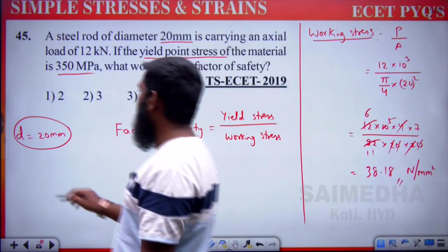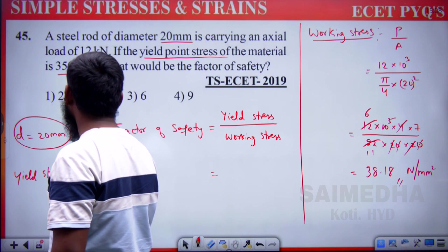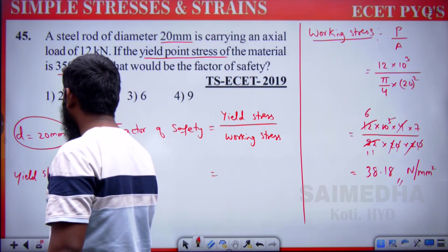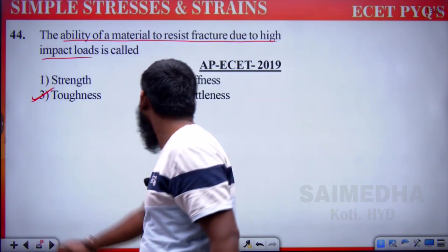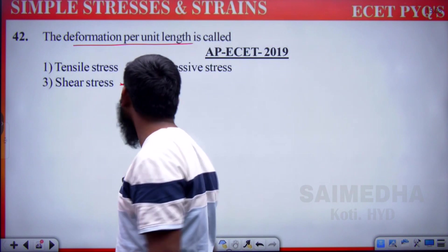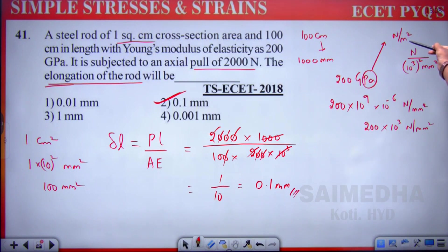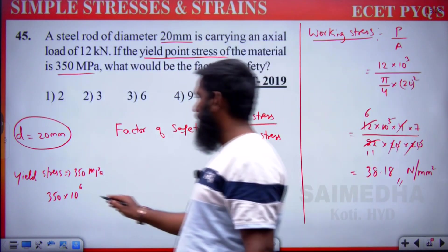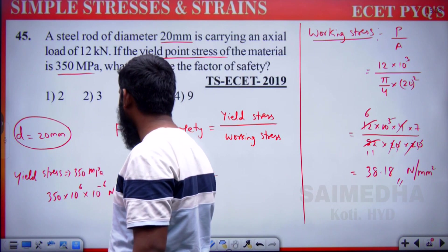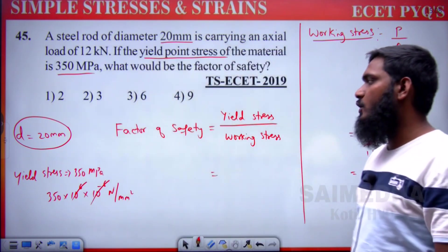Yield stress = 350 MPa = 350 Newton per mm square, since mega (10⁶) and the conversion factor (10⁻⁶) cancel. Working stress = 38.18 N/mm².